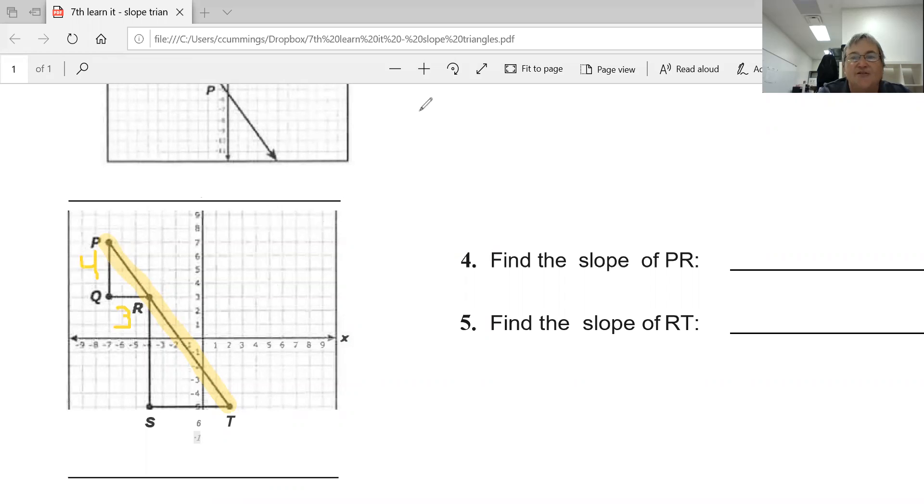And then if I use this triangle right here, my fall is here which is 8, and my run is 6. So 4 over 3 and 8 over 6, but that's simplified to 4 over 3. So the slope of this...